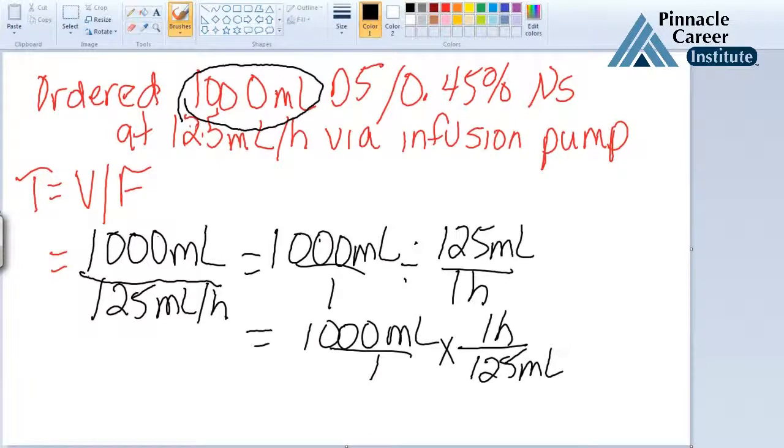Since you have milliliters on the bottom on the right and milliliters on the top on the left, they cancel each other out. So you're now going to have 1,000 hours divided by 125. And when you plug that into a calculator, you will get 8 hours.